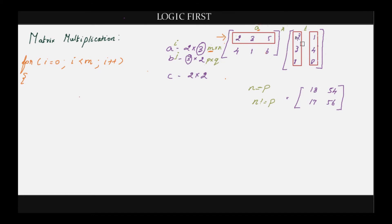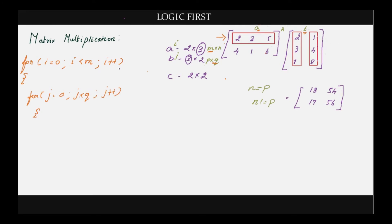For each row you have to multiply with each column in matrix B. The first row should be multiplied with the first and then the second column, and then the second row with the first and second column. That is why we write a loop within a loop — this inner loop should travel through the columns in matrix B. So it is: for j equal to 0, the number of columns in matrix B is Q, so j less than Q, j++. As mentioned, this program requires three loops.